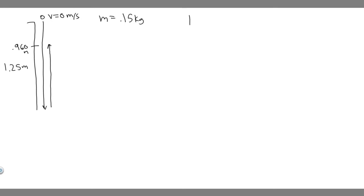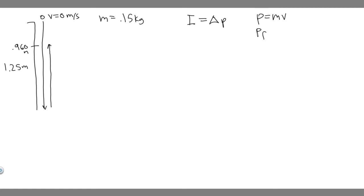So what is impulse? We denote impulse by I, and I is equal to the change in momentum. Momentum is equal to mass times velocity, so the change in momentum is the final momentum minus the initial momentum. Since momentum is mv, that's m_final·v_final minus m_initial·v_initial.